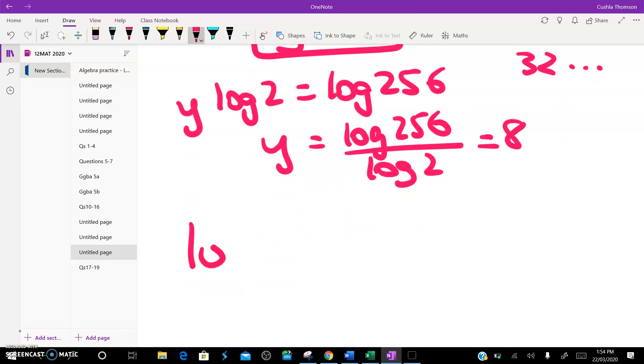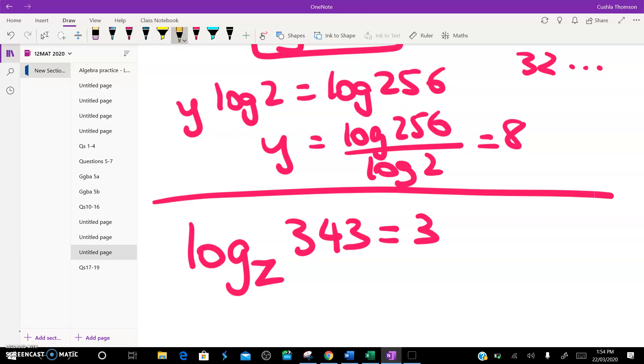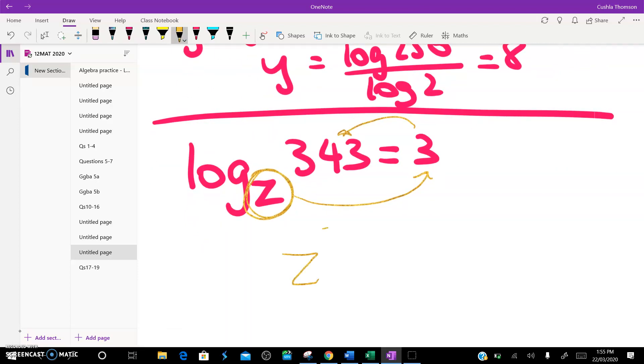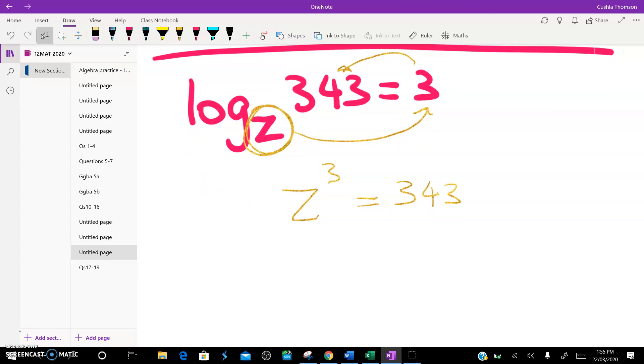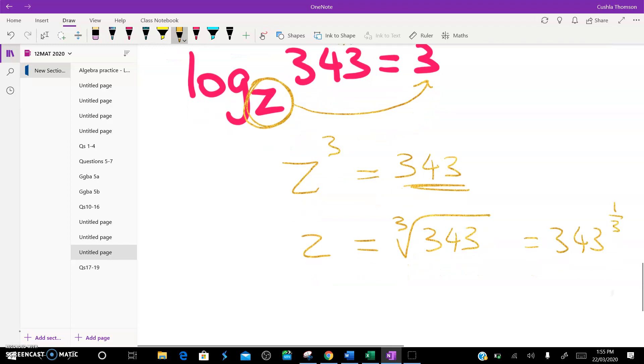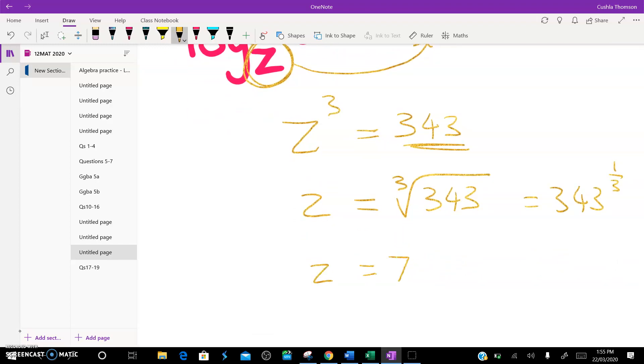The last question is this one. Log to base z of 343 is equal to 3. And again, we're going to do the loopy thing where we have this to the power of this is equal to this. z cubed is equal to 343. Now this one I can do just by knowing some of my powers. Or I can now take the cube root of both sides. So if z cubed is this, then z is equal to the cube root of 343. Or, as a fractional power, it's this. And you can get that on your calculator. And you can see that z is equal to 7.